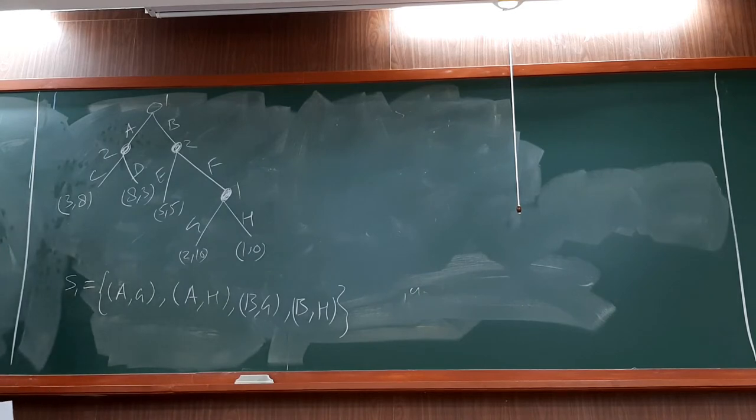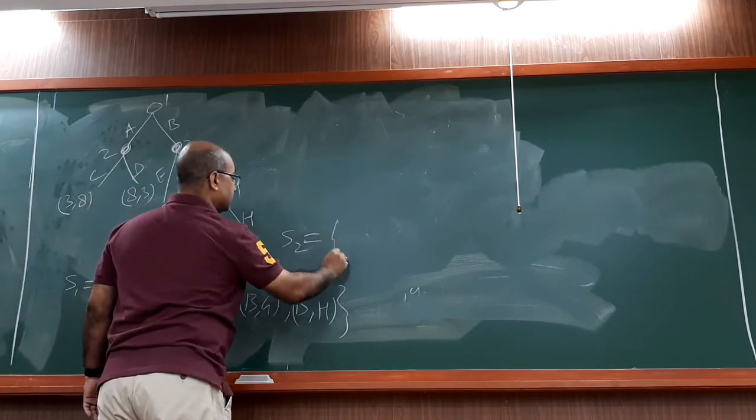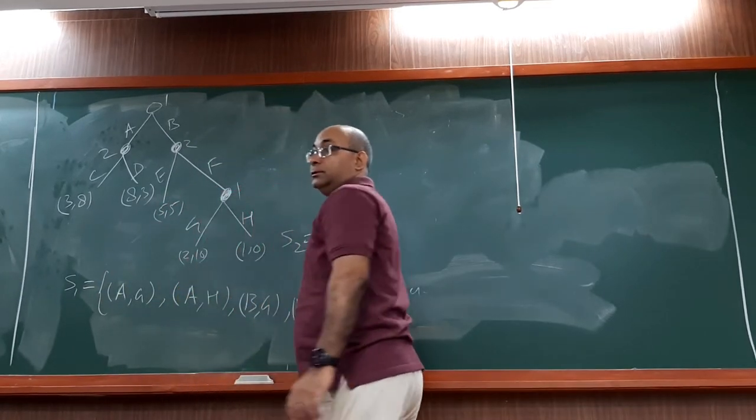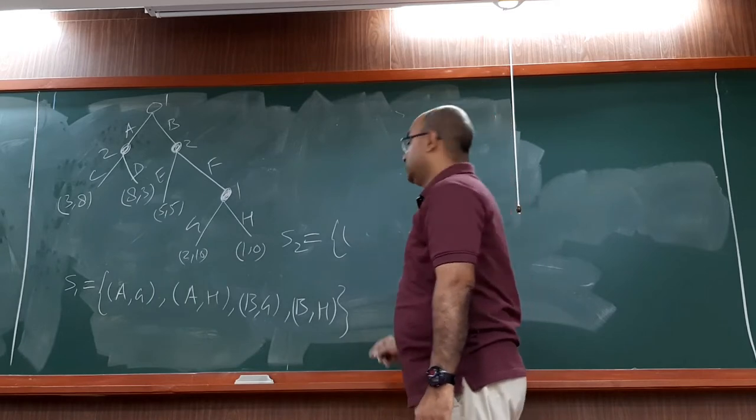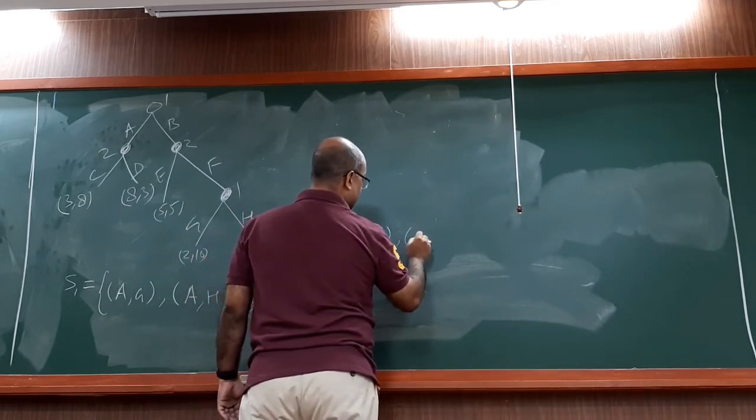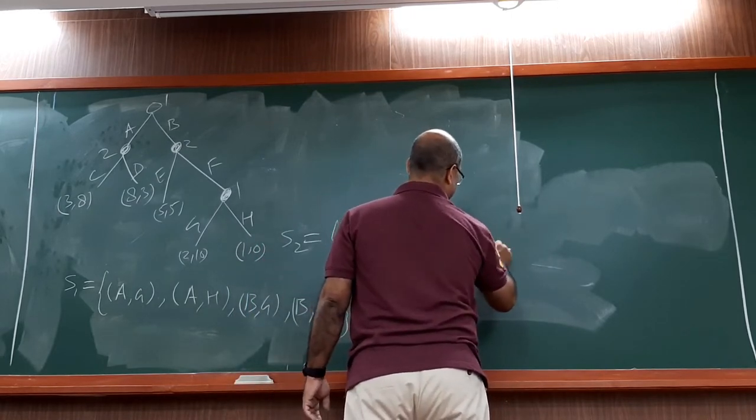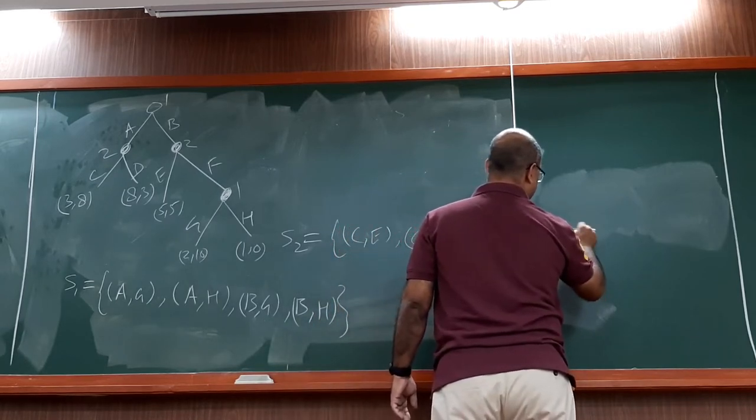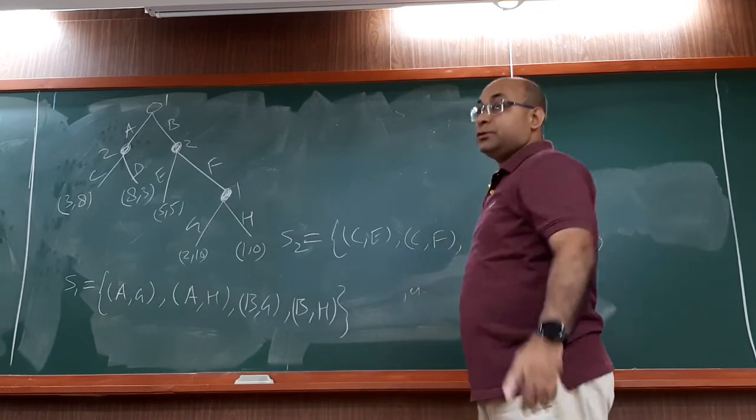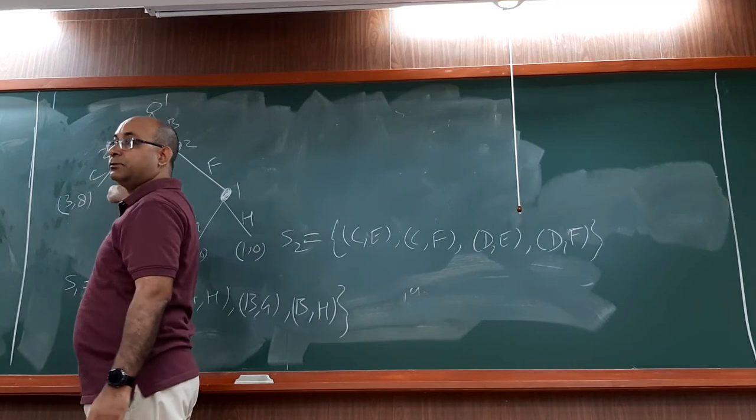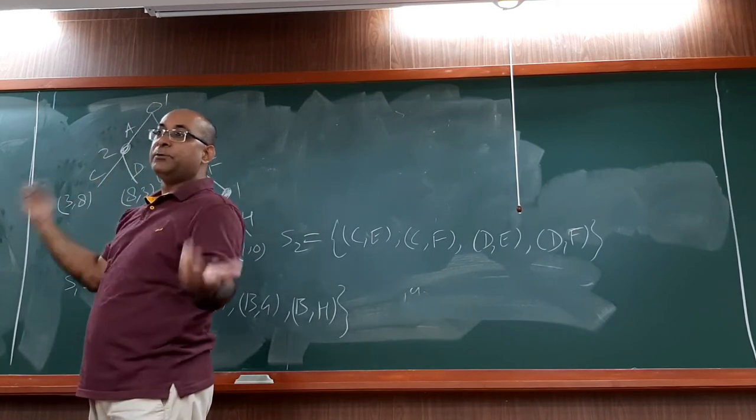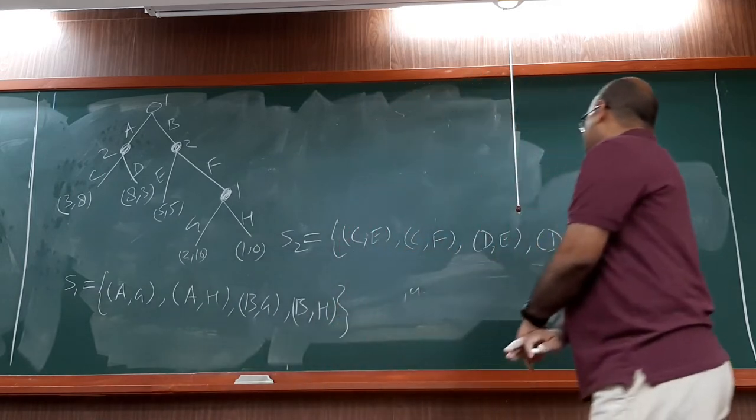Now why don't you write player 2's on your own? How many choice nodes does player 2 have? Two. So at one node you can take only one of the actions, not both the actions.